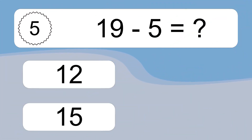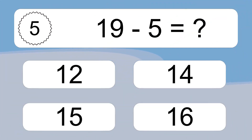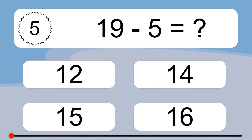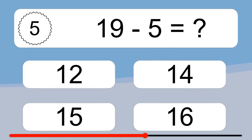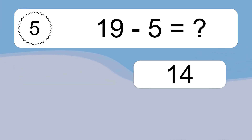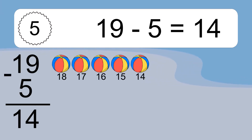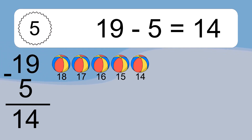19 minus 5 equals what? 19 minus 5 equals 14. Let's count it: 18, 17, 16, 15, 14.